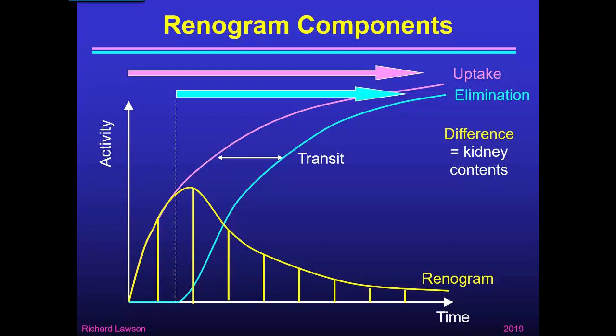So what we want to do is to quantify uptake. We really want to see the uptake curve. All we have available is the renogram curve. But fortunately, during the first few minutes we have a window of opportunity when the renogram represents uptake only — elimination hasn't yet started. The time that we can use for this quantification is any time before the uptake and renogram curves diverge. We can't see the uptake curve, so we have to estimate where it is, but clearly it must come before the peak of the renogram.